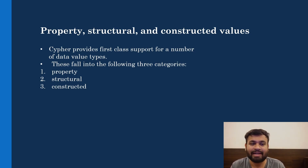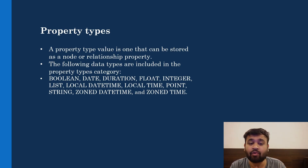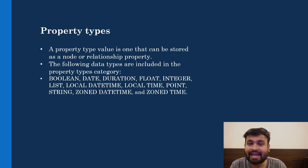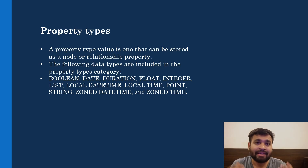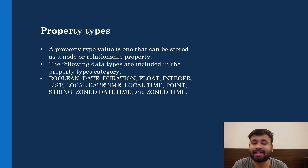As the name suggests, a property type value is something that can be stored as a node or a relationship property. A node, which is a record in a graph database, can contain different sets of properties — key-value pairs. A similar structure can exist on the relationship as well, and you can have multiple properties present on a relationship.